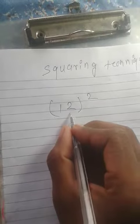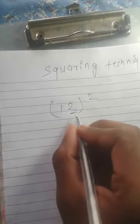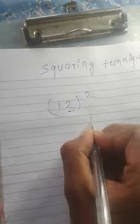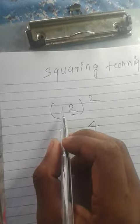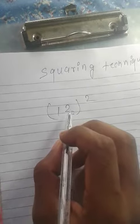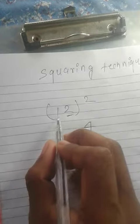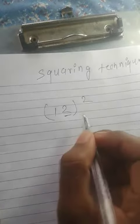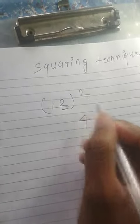You have to square the last number. The square of 2 is 4. Then you have to multiply first and second number and multiply by 2 because we are doing a squaring. So 1 times 2 equals 2, and if you multiply by 2, it becomes 4. And the square of 1 is 1.